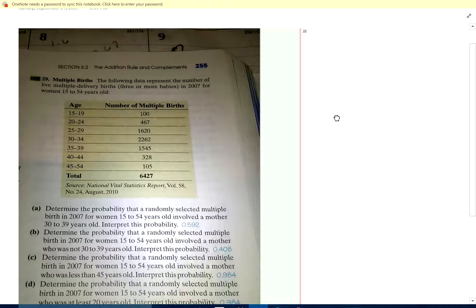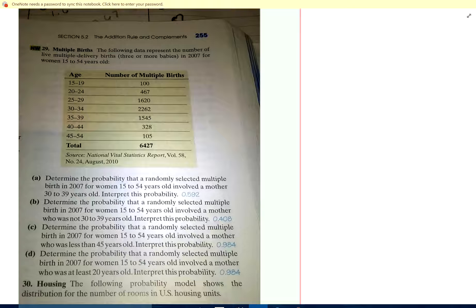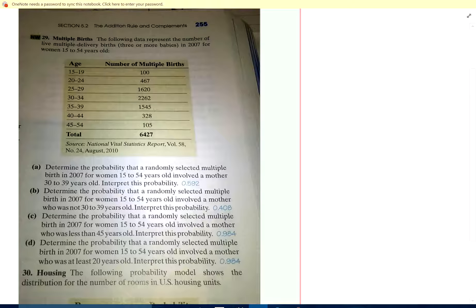29. Multiple births. The following data represents the number of live multiple delivery births, three or more babies. Yikes! In 2007 for women 15 to 54. Determine the probability. So we've got all this information: 15 to 19, multiple births, there were 100, and so forth. Determine the probability of random such a multiple births for women 15 to 54.